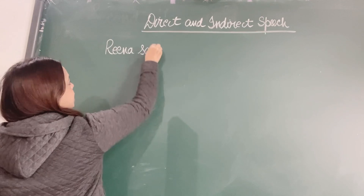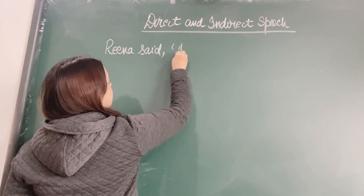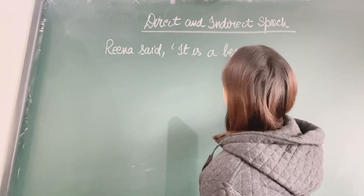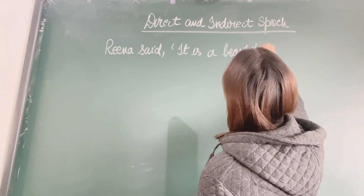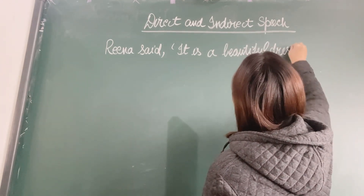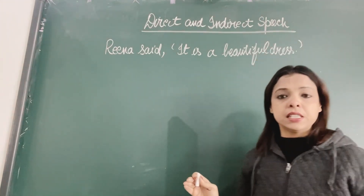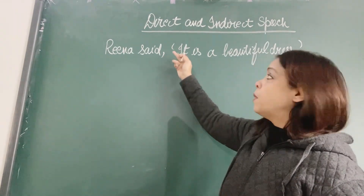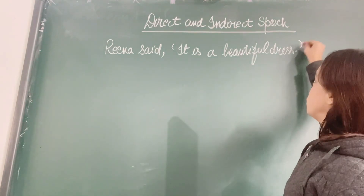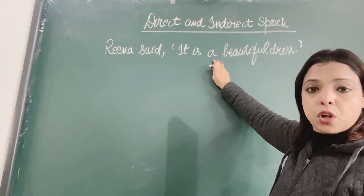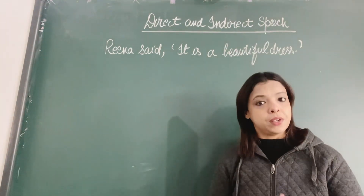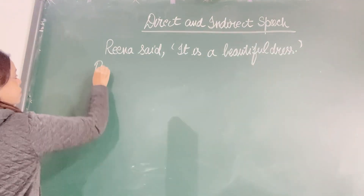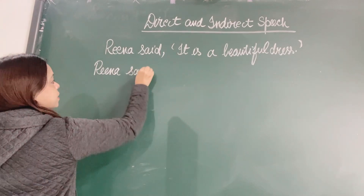Rina said, 'It is a beautiful dress.' As you can see, this sentence is in direct speech — Rina said, comma, then inverted commas, 'It is a beautiful dress,' exclamation mark, inverted commas closed. That is the exact word of the speaker. This is a quote, so we know this is the direct speech. Now if I change it into indirect — Rina said...